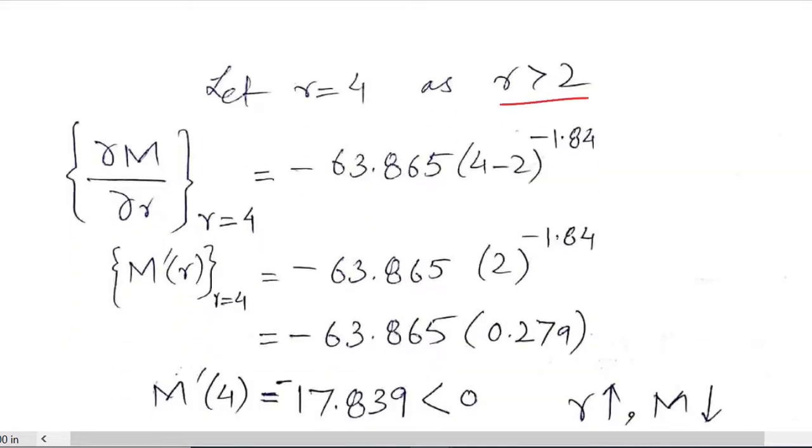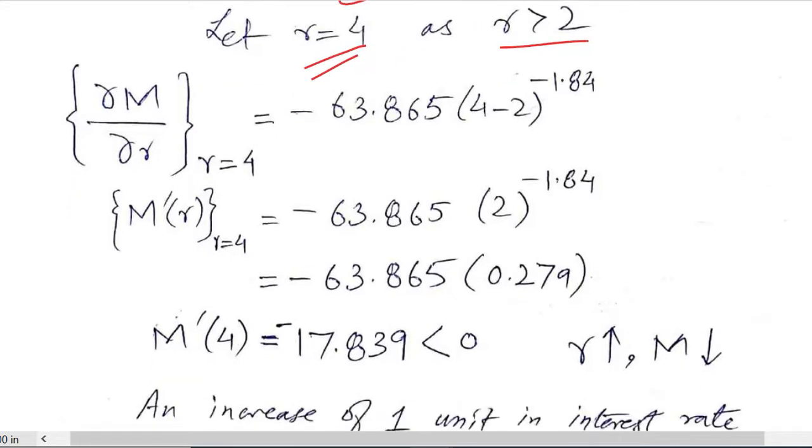As greater than 2 r value is acceptable, we say that r is for example equal to 4. So when we substitute the value 4 for r, the answer would be through these steps and the final answer is this negative value, minus 17.839.